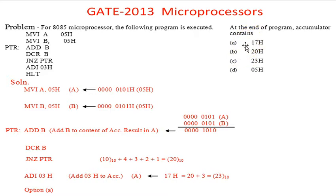17H corresponds to option A. The content after the execution of this program would be 17H in the accumulator. This is the right choice. This has been quite a simple problem. Thank you very much.